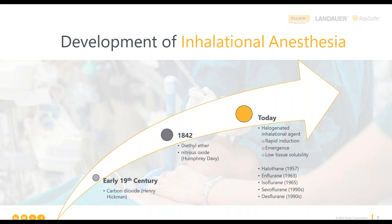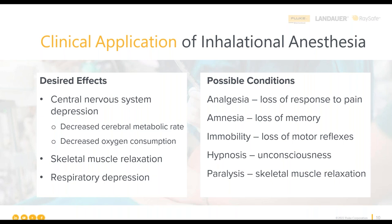But what is anesthesia trying to do? Clinicians administering anesthesia seek to depress the central nervous system, relax the body, decrease metabolism, and reduce respiration and oxygen consumption. Anesthesiologists are looking for the patient not to feel pain — called anesthesia — not to remember, called amnesia, not to move — immobility — to be unconscious — hypnosis — and to be relaxed — paralysis. Anesthesia really seeks to do a lot of things so clinicians can do their work.